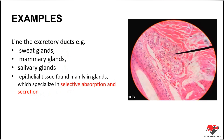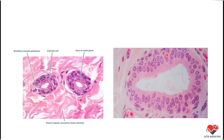Under the microscope, we can recognize the multiple layers of stratified cuboidal epithelium because of the multiple levels of nuclei. In a closer view, the multiple layers are clearly visible due to prominent round nuclei arranged in multiple rows. Here we can see stratified cuboidal epithelium lining the duct of sweat glands.